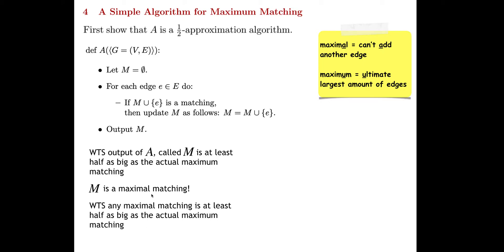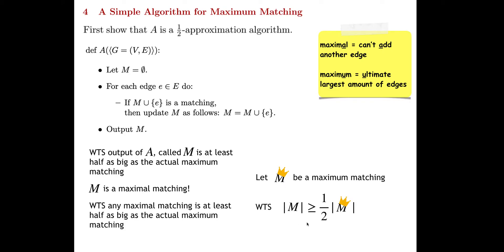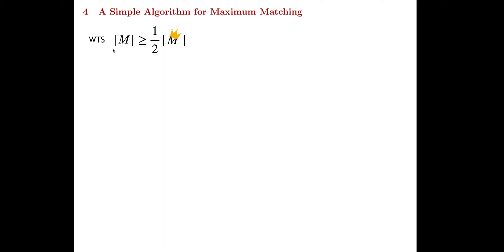If M is a maximal matching, let's compare it to a maximum matching — call it M-crown, the ultimate matching. We want to show that the size of M is at least half the size of M-crown, where size means the number of edges. Assume for the sake of contradiction that this inequality does not hold: that the size of the maximal matching is actually less than half the size of the maximum matching.